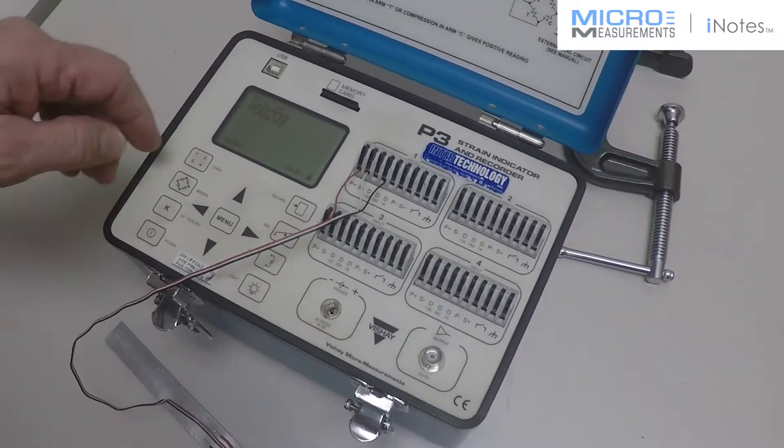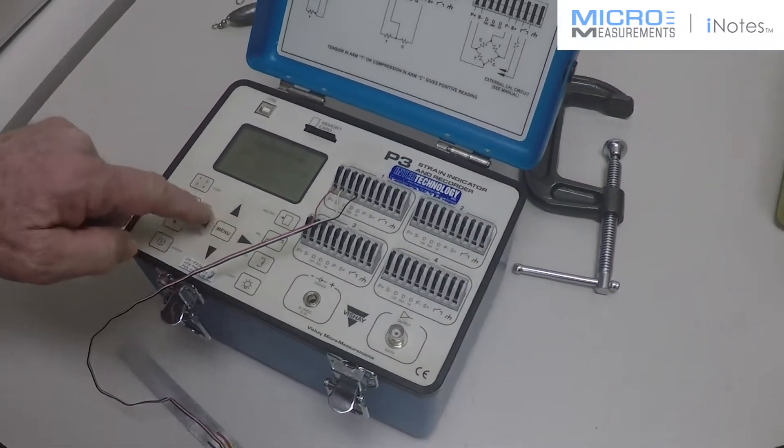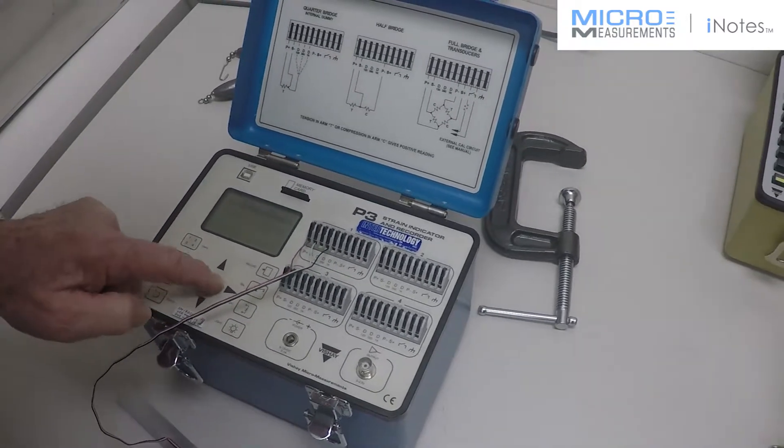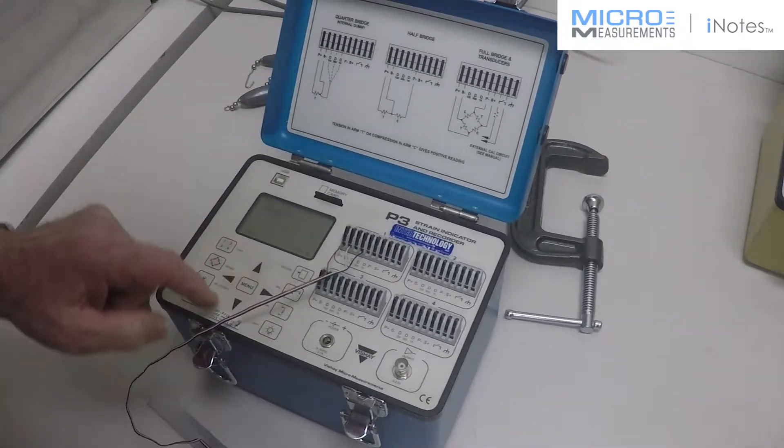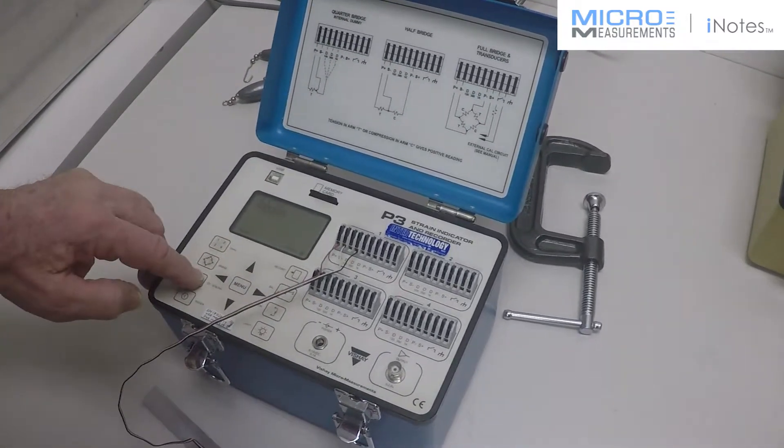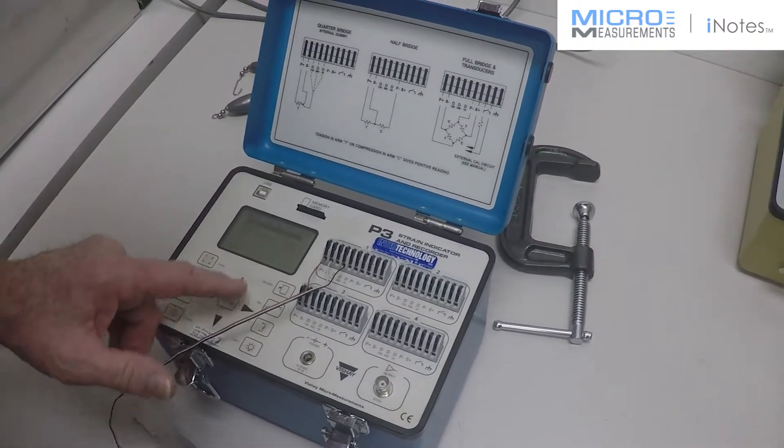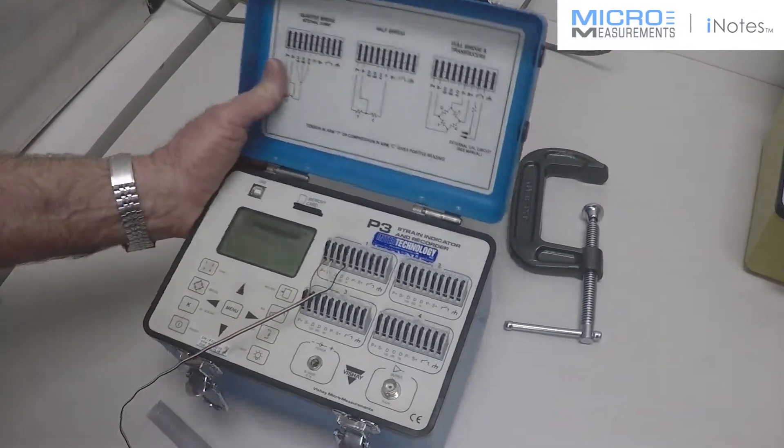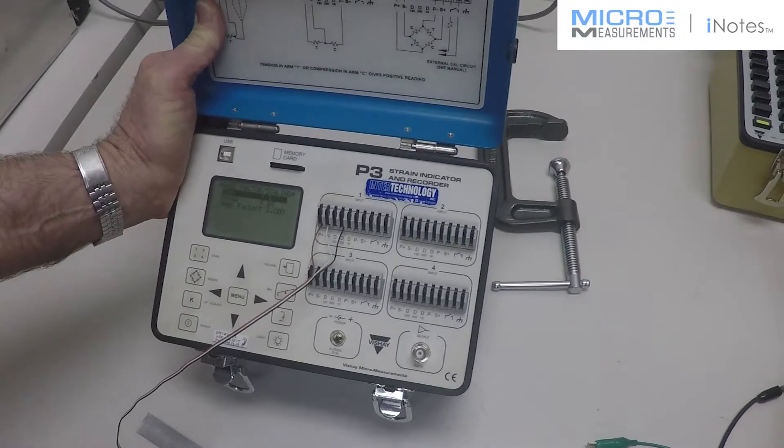If I look at the setup of the gauge, the setting of gauge one tells us that we're reading strain with a gauge factor of two.